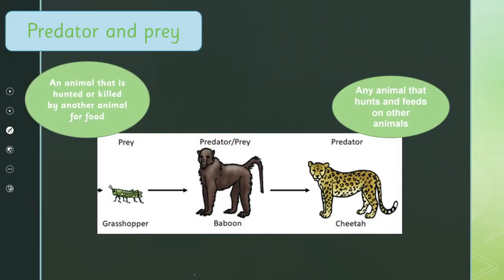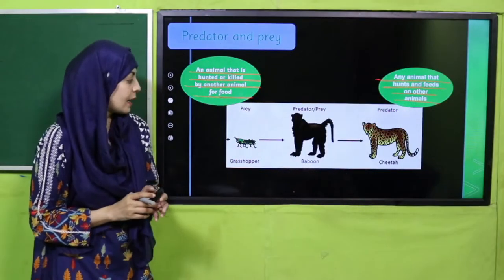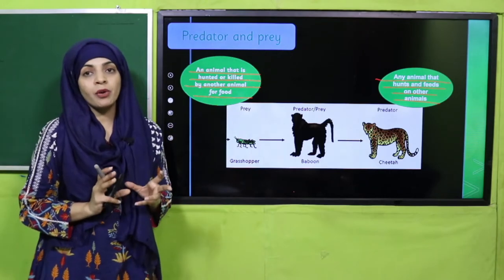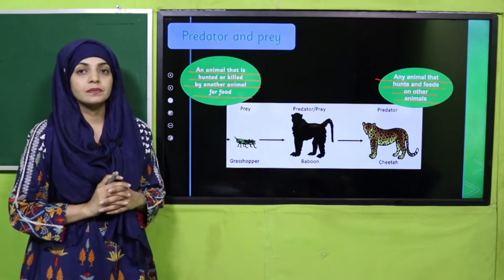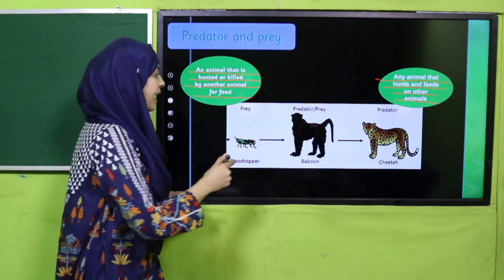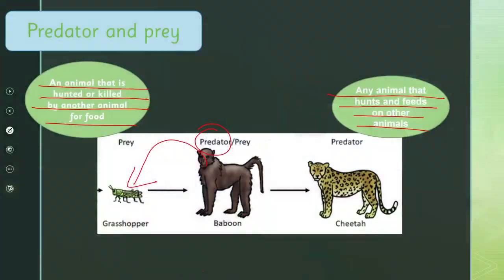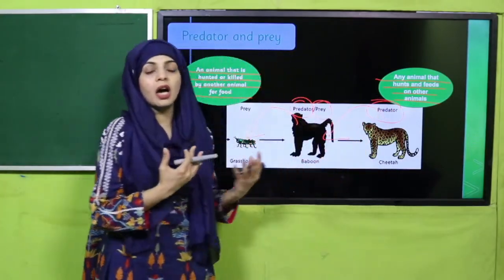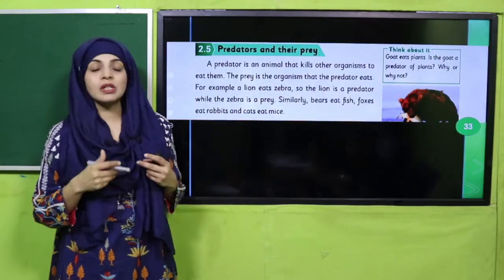Now let's discuss predator and prey. An animal that is hunted and eaten by other animals is called prey, whereas an animal that hunts and feeds on other animals is called a predator. In the food chain — grasshopper, baboon, and cheetah — the baboon is both a predator and prey, whereas the cheetah is only a predator because it feeds on other animals.